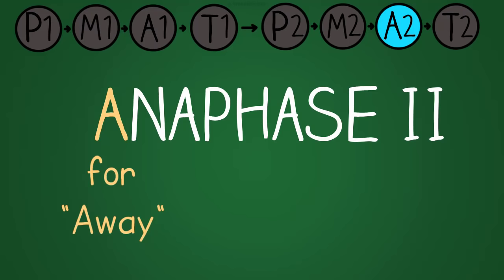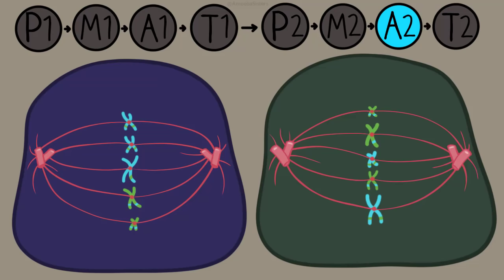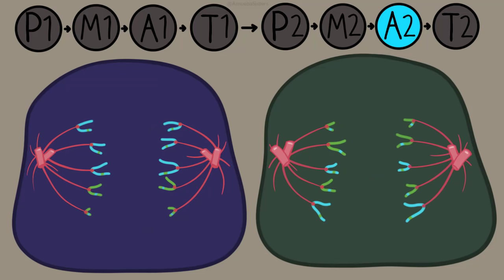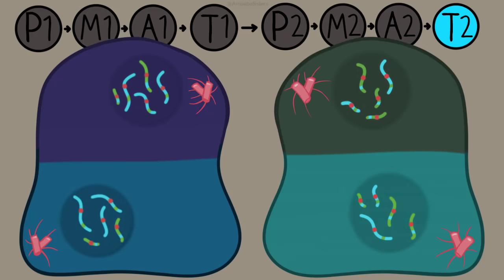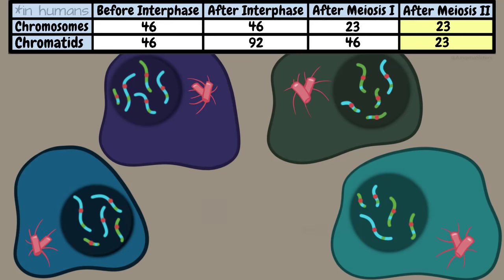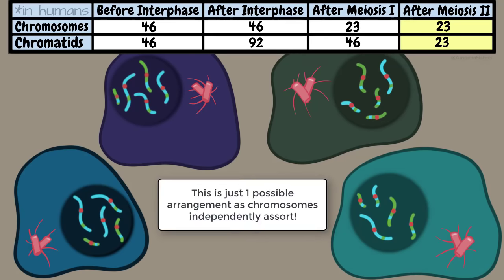In anaphase 2 — A for away — it's the chromatids that are pulled away by the spindle fibers. In telophase 2, you can see the nuclei reforming and the two cells dividing, with four cells forming total. Cytokinesis follows to completely split the cytoplasm.